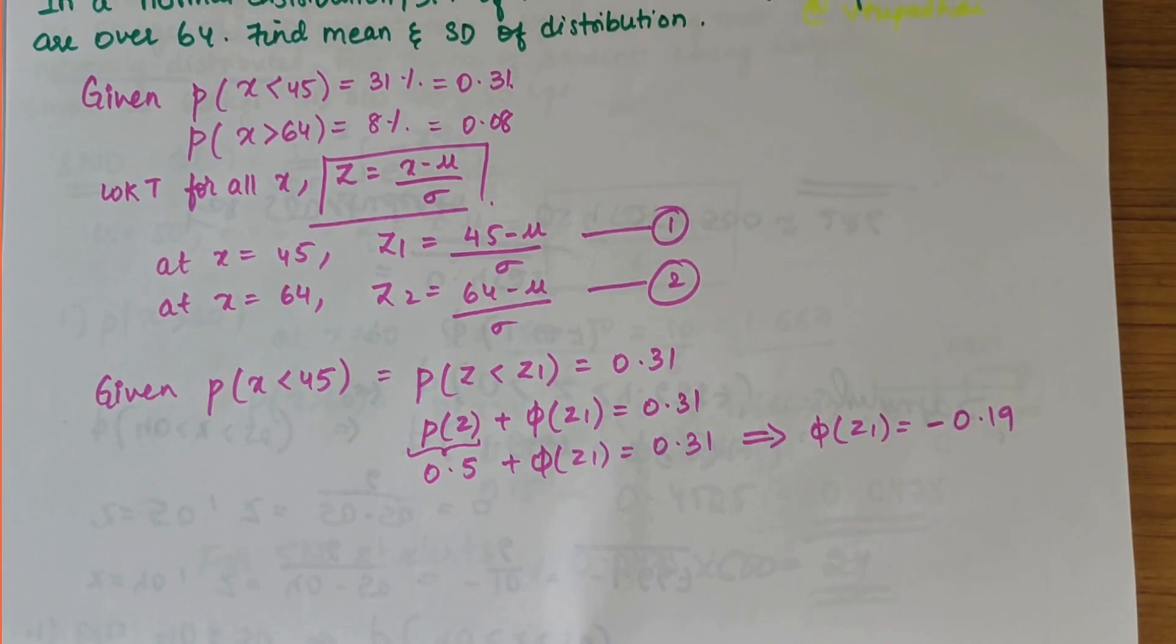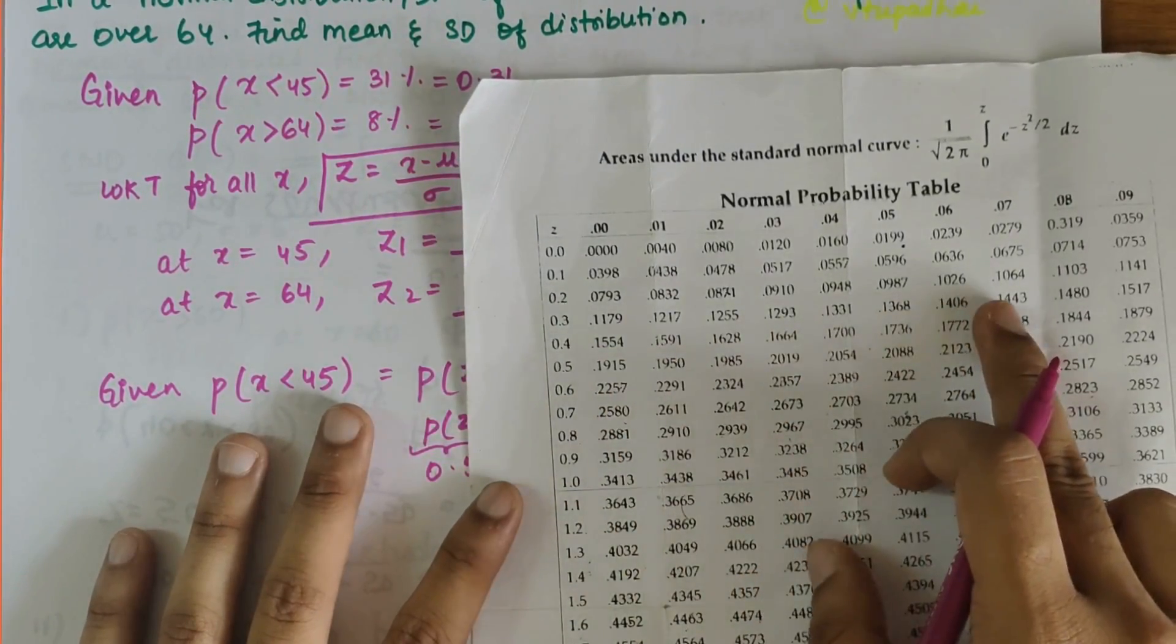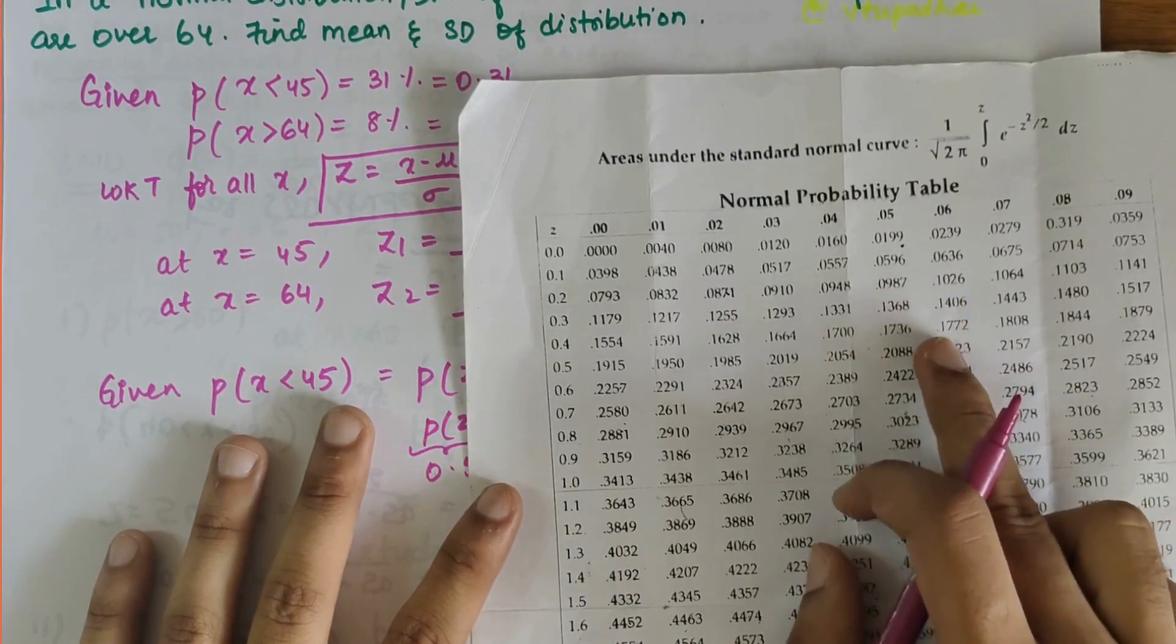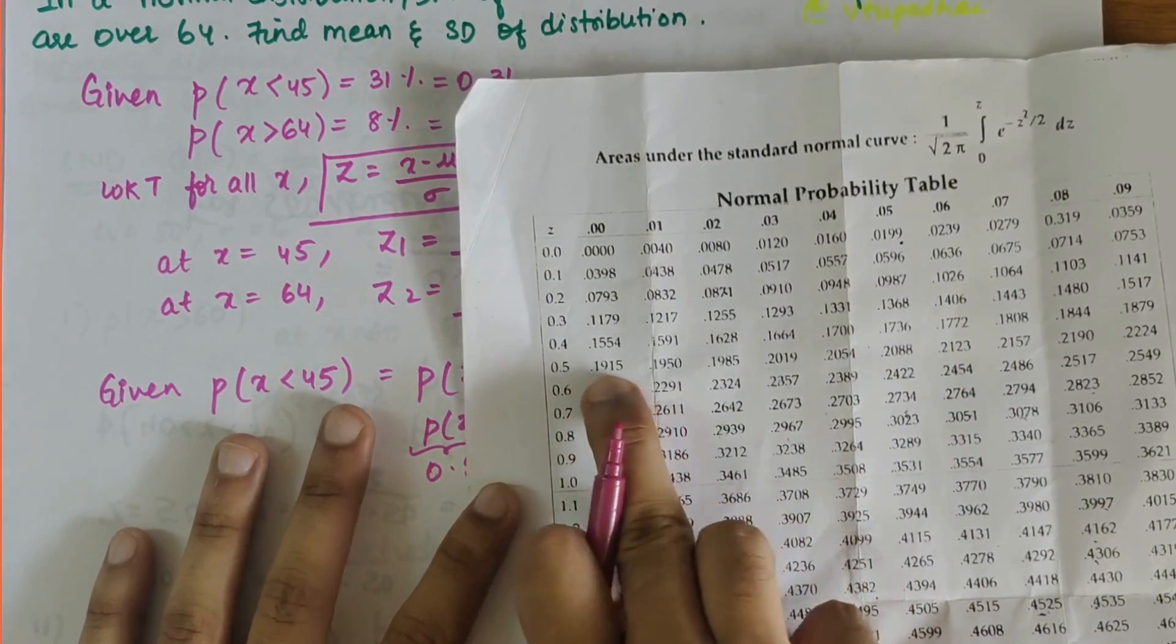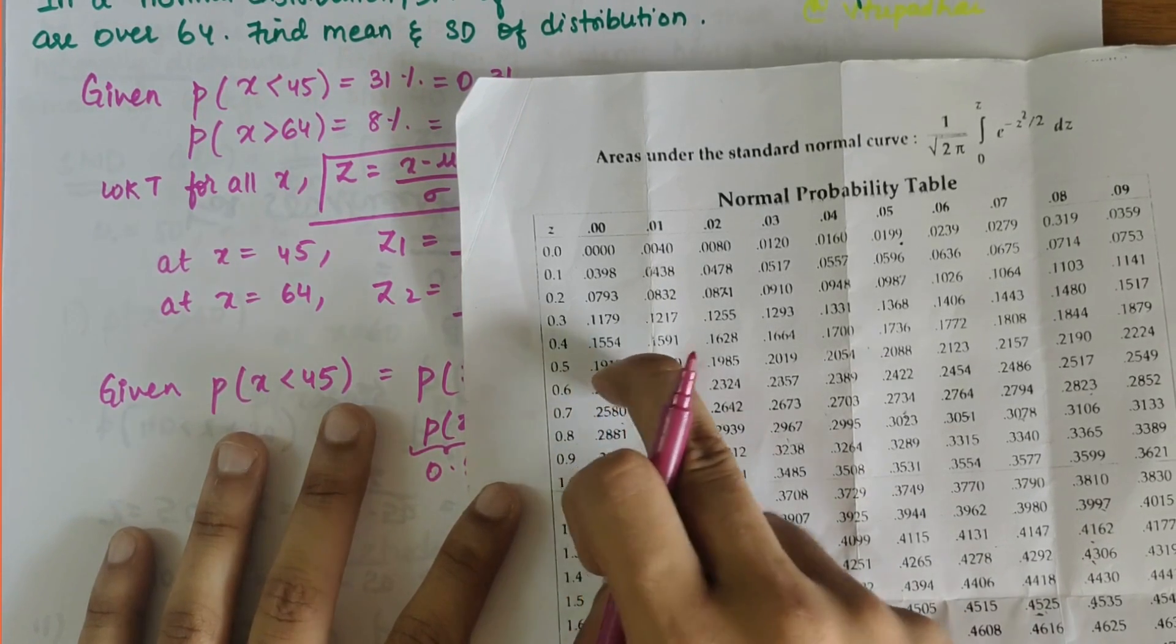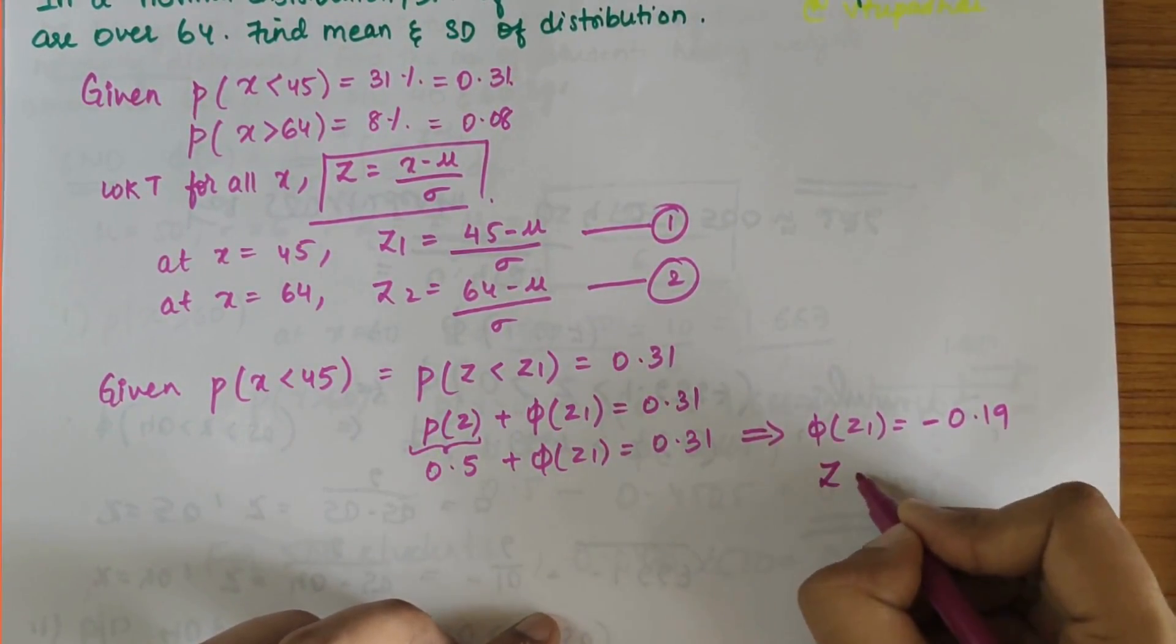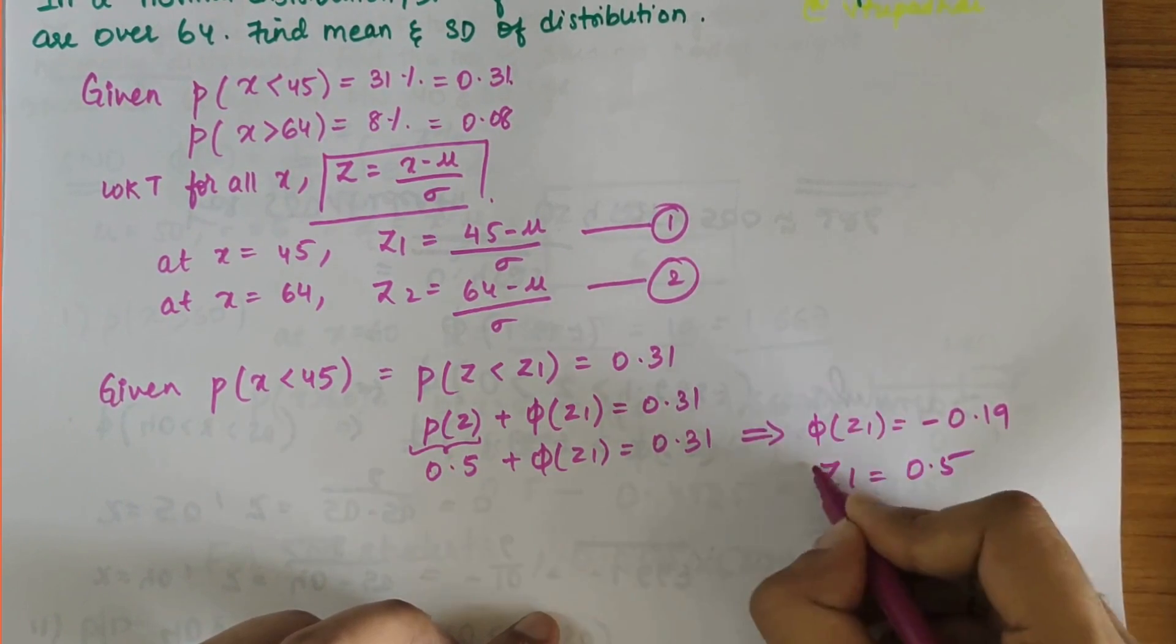Using the normal probability table or calculator, you can find the Z value. So 0.19 is here in the table, it comes under 0.5, so the Z1 value would be 0.5.